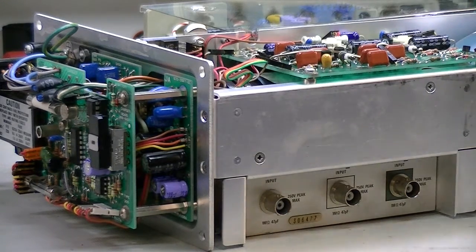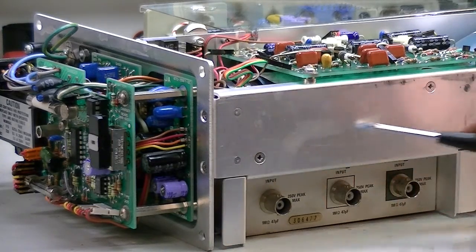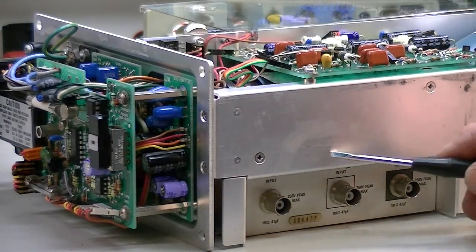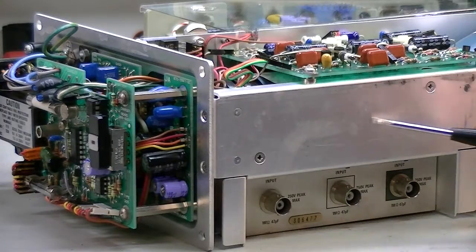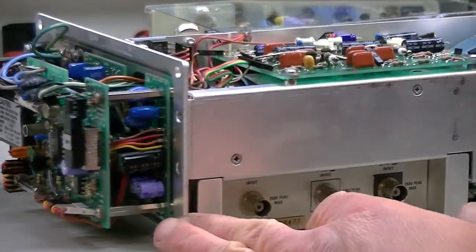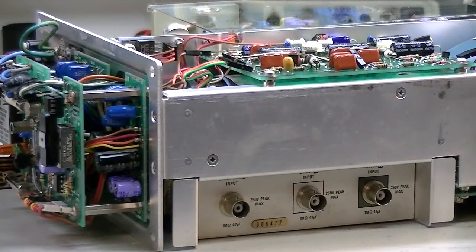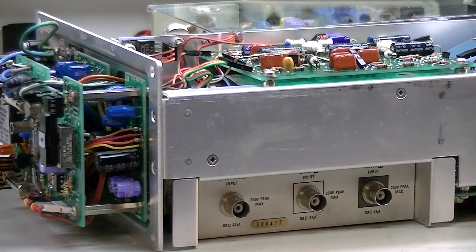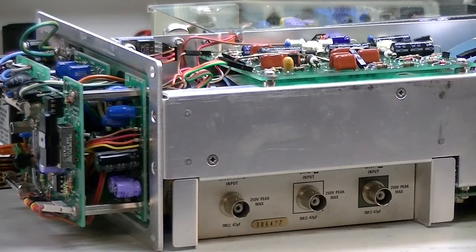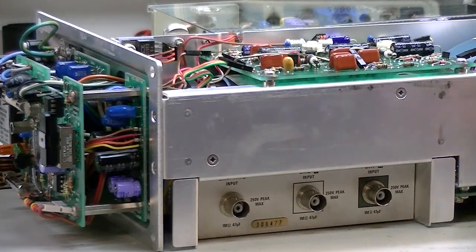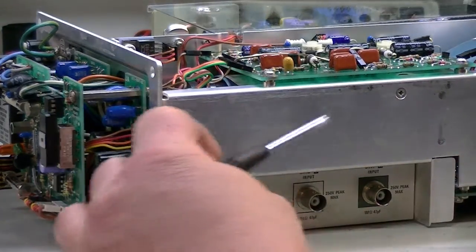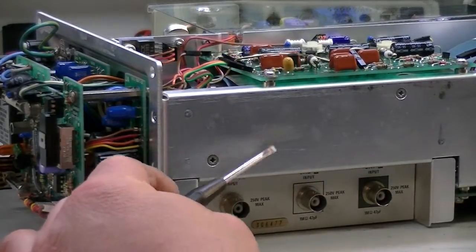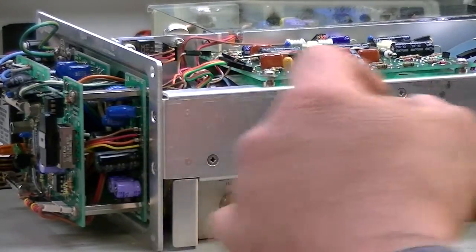I know back behind here where these two mounting screws are is where the high voltage transformer is. I've been doing some research on the internet. It seems like that is a fairly failure prone unit. But where it's at, even though it's mounted on this heat sink, or well not really heat sink, just this aluminum chassis.